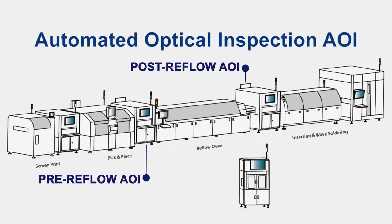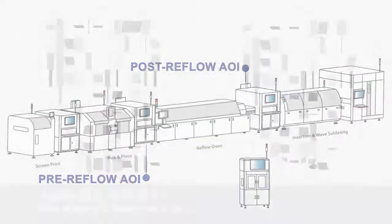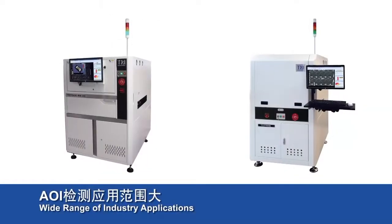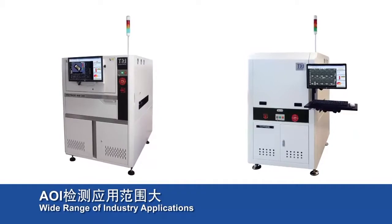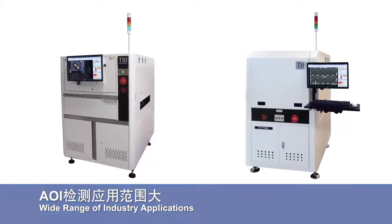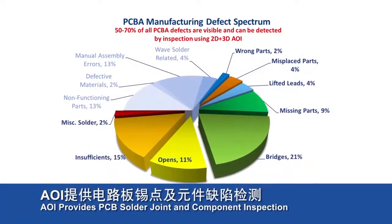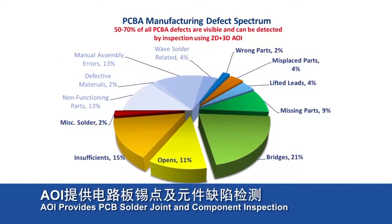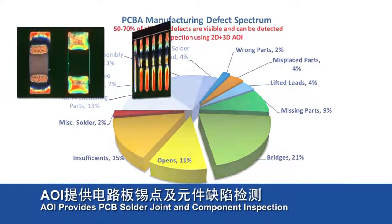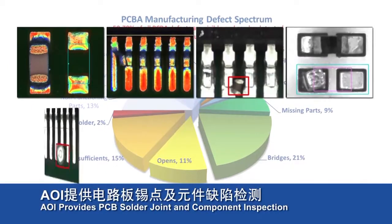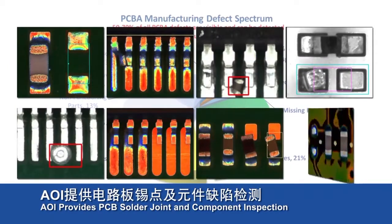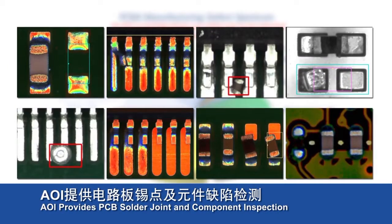Automated Optical Inspection. AOI stands for Automated Optical Inspection and is responsible for inspecting components, solder joints, open and short circuits, and other forms of defects on PCB assemblies.